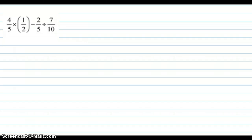So we start off our equation multiplying the 4 and the 1 and the 5 and the 2, because this would give us 4 tenths. Then we continue writing out the equation, 2 over 5 divided by 7 over 10.